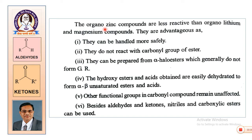What is the importance of this reaction? Organozinc compounds are less reactive than organolithium and organomagnesium compounds, so they are advantageous and can be handled safely. They do not react with the carbonyl group of the ester. They can be prepared from alpha-halo esters, which generally do not form Grignard reagents. The hydroxy esters and acids obtained are easily dehydrated to form alpha-beta unsaturated esters and acids. Other functional groups in the carbonyl compound remain unaffected. Besides aldehydes and ketones, nitriles and carboxylic esters can also be used.